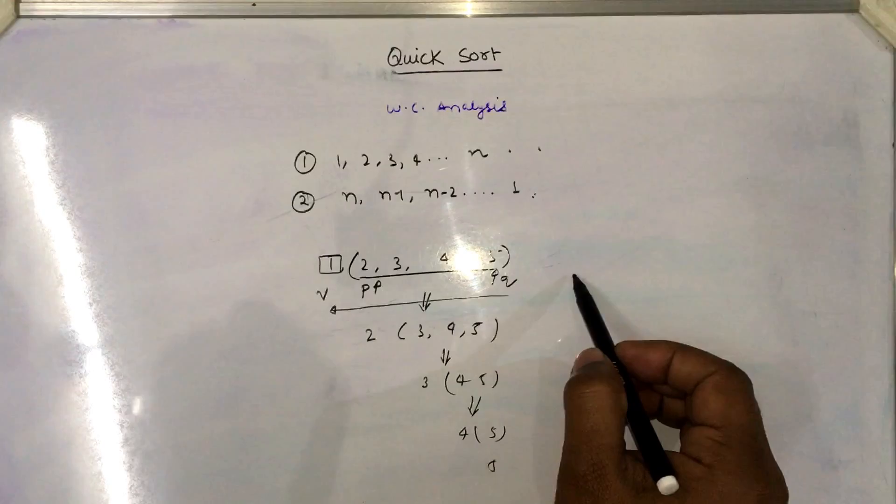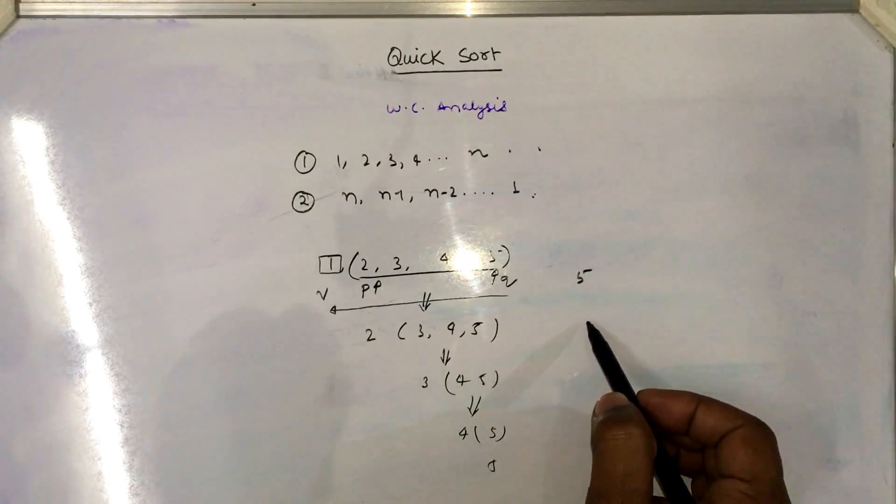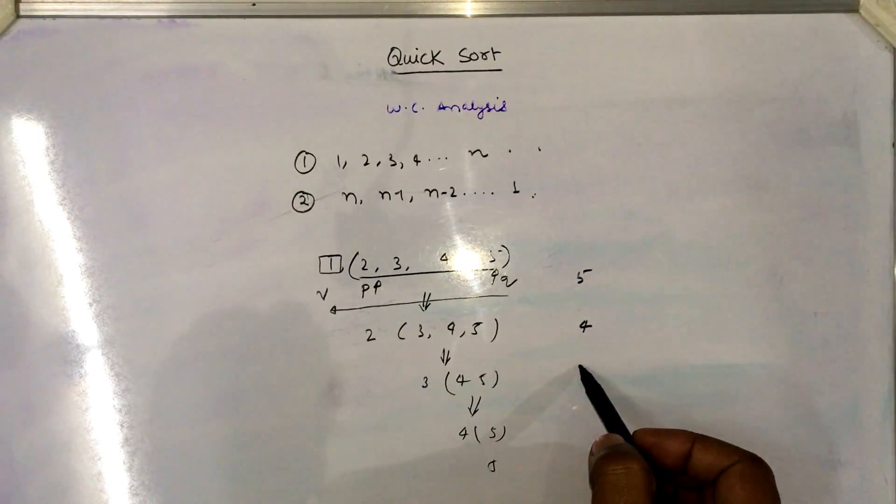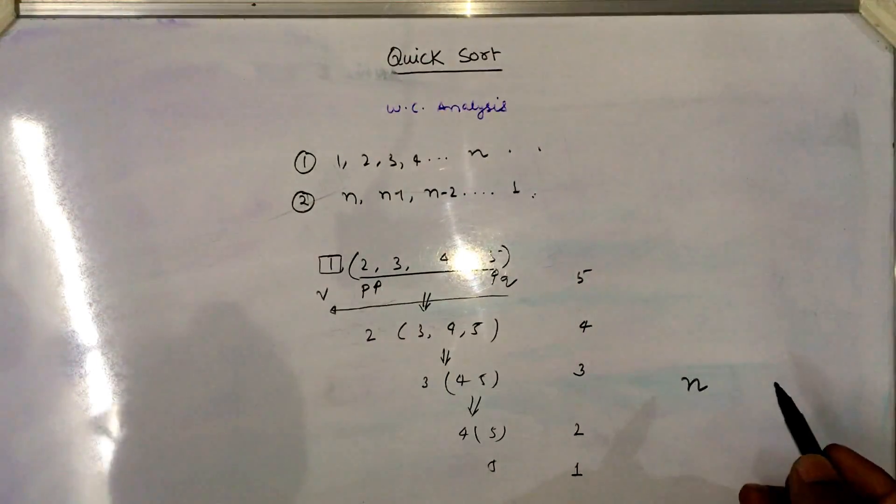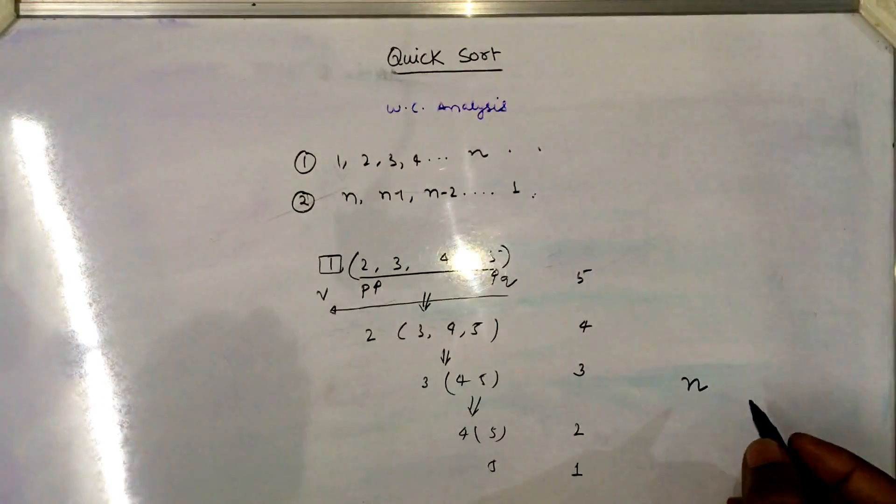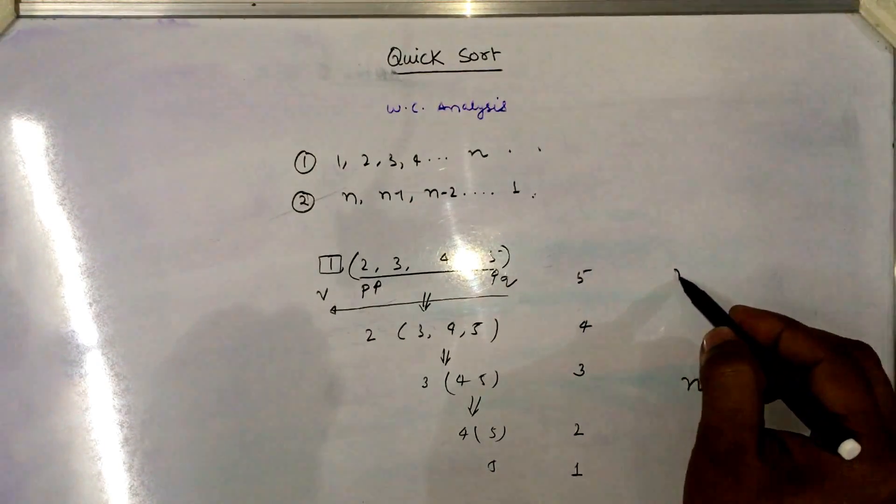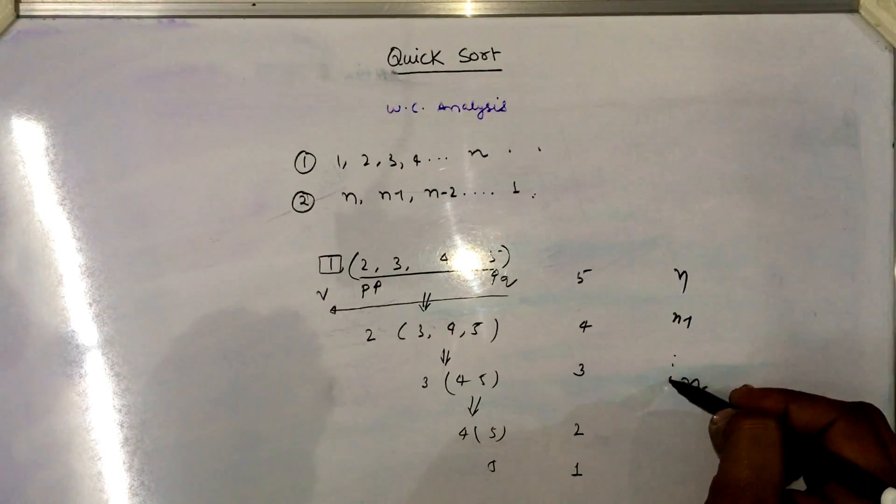So in this one, I require 5 number of comparisons, then I require 4 number of comparisons, then I require 3 number of comparisons, then I require 1 number of comparison. So if I have taken n elements, the total number of comparisons is n, n-1 and so on up to 1.